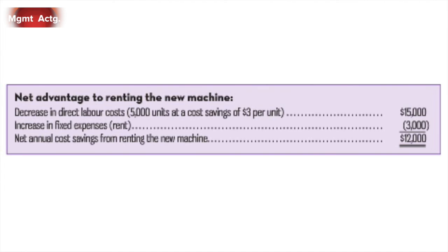Here's the end solution — just a quick way to get the net advantage of renting the new machine: decrease in direct labor, $15,000; increase in the rental cost, $3,000; net benefit, $12,000. That's nice and easy. While you were looking at that first chart with the per unit costs, you probably saw almost right away that the only thing that's different is labor — it's $3 cheaper per unit, there are 5,000 units, and you can do the math. That's really about it. It's application.